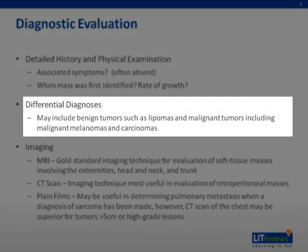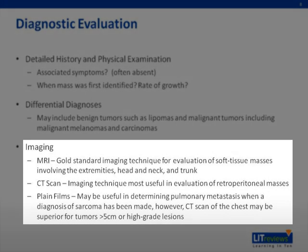Some of the differentials for sarcomas include lipomas and other benign lesions, as well as other malignant tumors such as malignant melanomas or other carcinomas that can arise on the extremities or trunk. Regarding imaging, MRI is the gold standard for evaluation of soft tissue masses involving the extremities, head and neck, and trunk. CT scan has higher utility for sarcomas that arise intraperitoneally or retroperitoneally in the abdomen. Plain films have very little use in the evaluation of sarcomas.